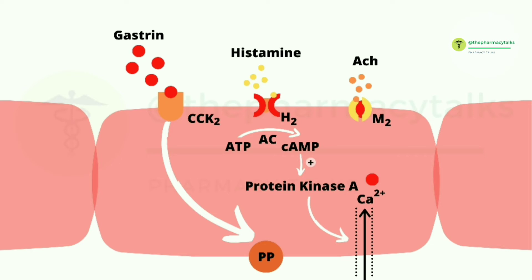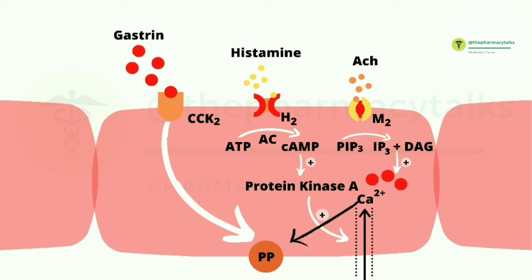Acetylcholine is released by the parasympathetic system. When acetylcholine binds to the muscarinic receptor, it activates another G protein-coupled receptor which is attached with the phospholipase C system. This leads to formation of inositol phosphate and diacylglycerol from phosphatidylinositol bisphosphate. Inositol phosphate and diacylglycerol will increase the intracellular calcium levels. This increased intracellular calcium will stimulate the proton pump, leading to the exchange of potassium and hydrogen ions and hence secretion of HCl.